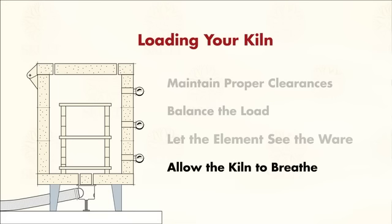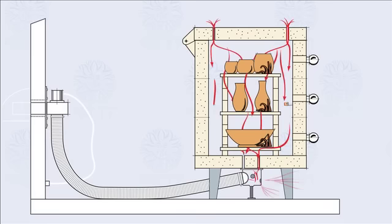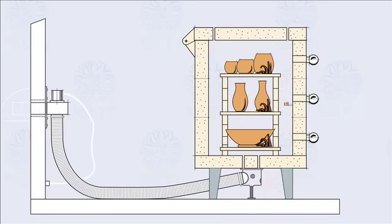Allow the kiln to breathe. Another way heat work is achieved within the kiln is through convection. Heated air currents are constantly moving throughout the kiln chamber. Allowing these currents to move freely through the kiln will help ensure the even heating of your kiln.